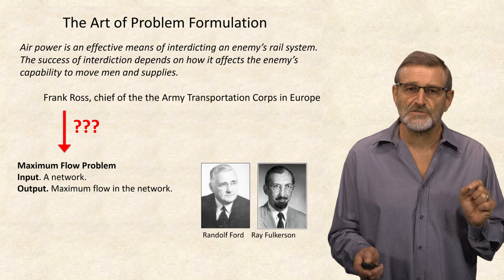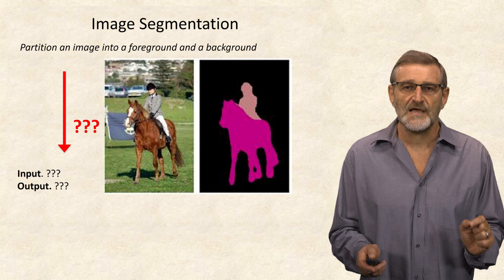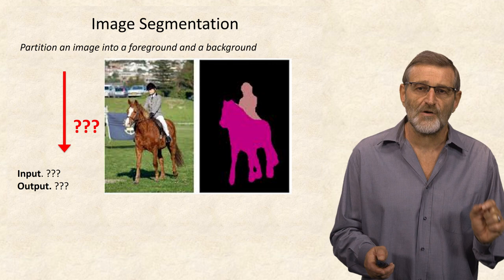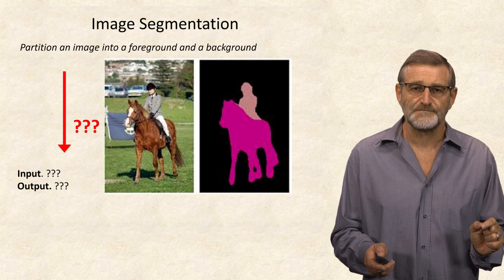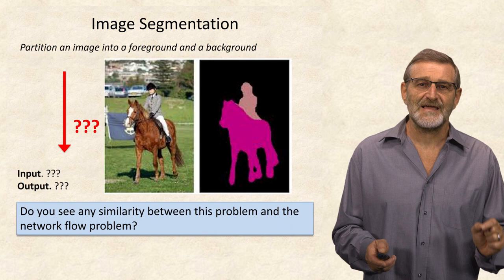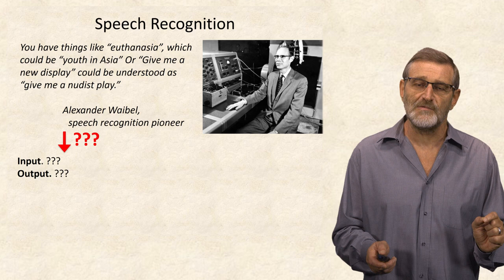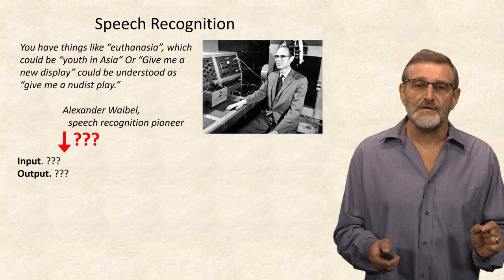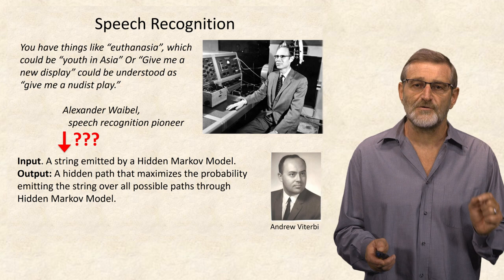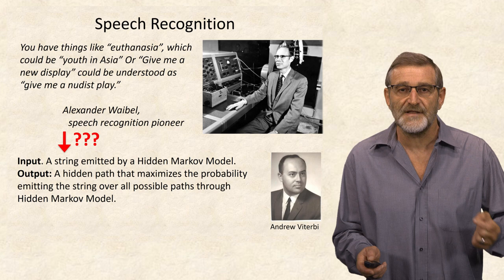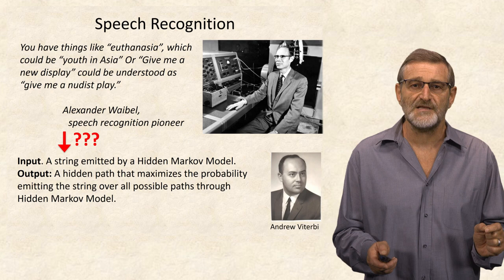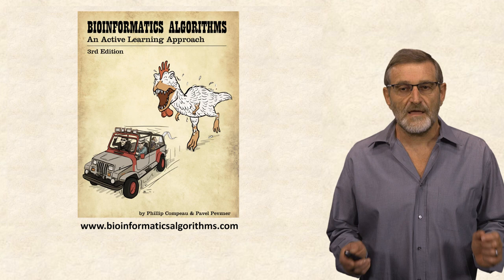For example, if I ask you to solve the image segmentation problem informally, we all understand what problem we want to solve — but can you turn this real-life problem into a precise problem formulation? What is the input and the output? Do you see any similarity between this problem and the network flow problem? Likewise, it is absolutely unclear how to transform the real-life speech recognition problem into an algorithmic problem formulation. Half a century ago, Andrew Viterbi came up with a brilliant problem formulation based on hidden Markov models that are now at the heart of speech recognition and many other machine learning applications.